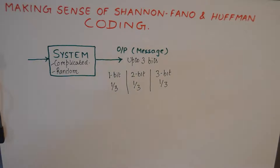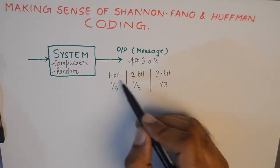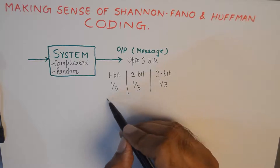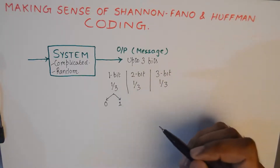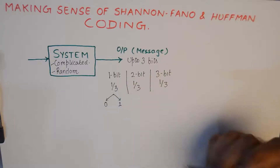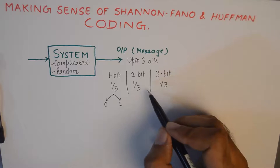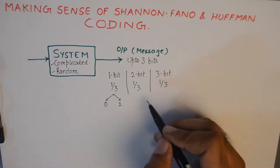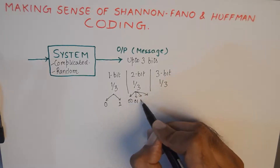If you can understand this distribution, it will make more sense that once a one-by-three probability is assigned to a one-bit message, there are only two kinds of one-bit messages possible: zero and one. These two have a pretty high probability of one by three. Similarly, when it comes to two-bit messages, a two-bit message has a probability of one by three, but the two-bit messages themselves are double in number — we could get 00, 01, 10, or 11.